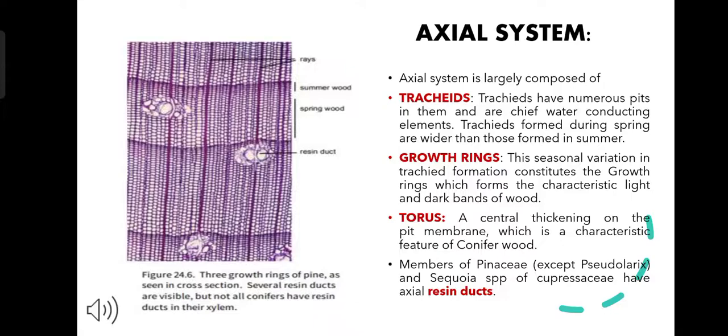During the summer or the growing season, the tracheids have a very small lumen. Whereas in the spring season, the tracheids have a larger lumen.